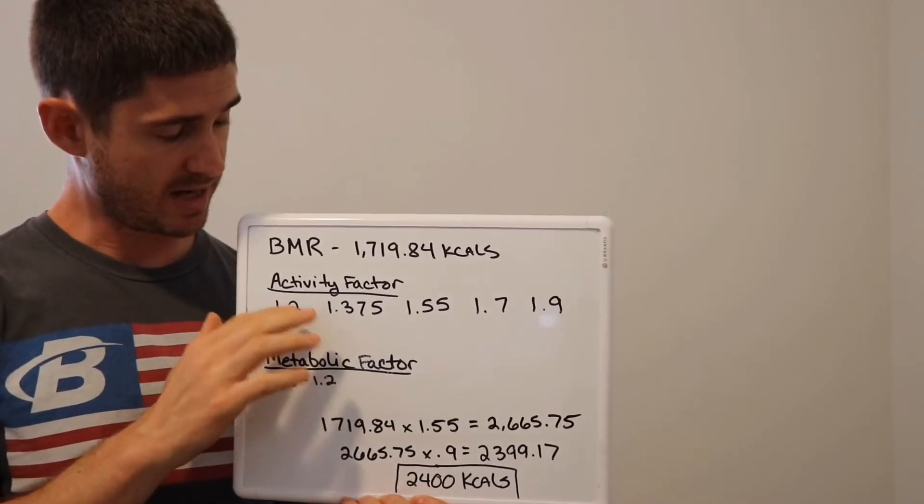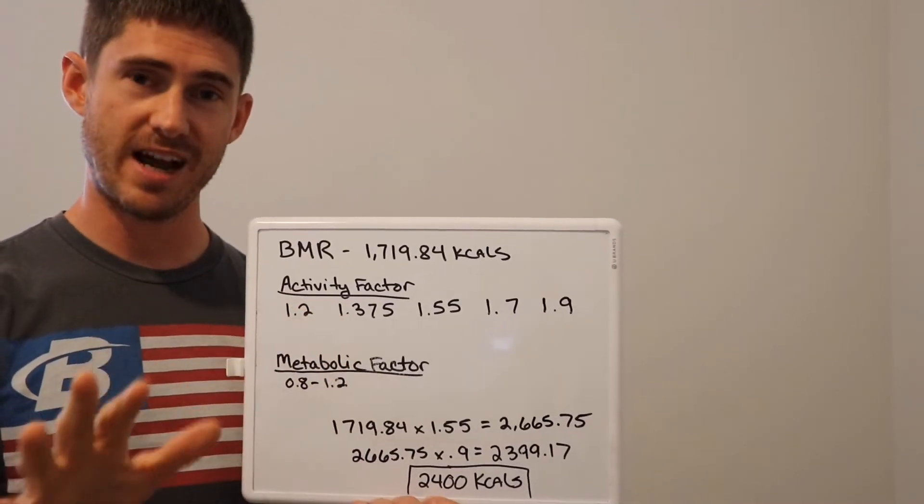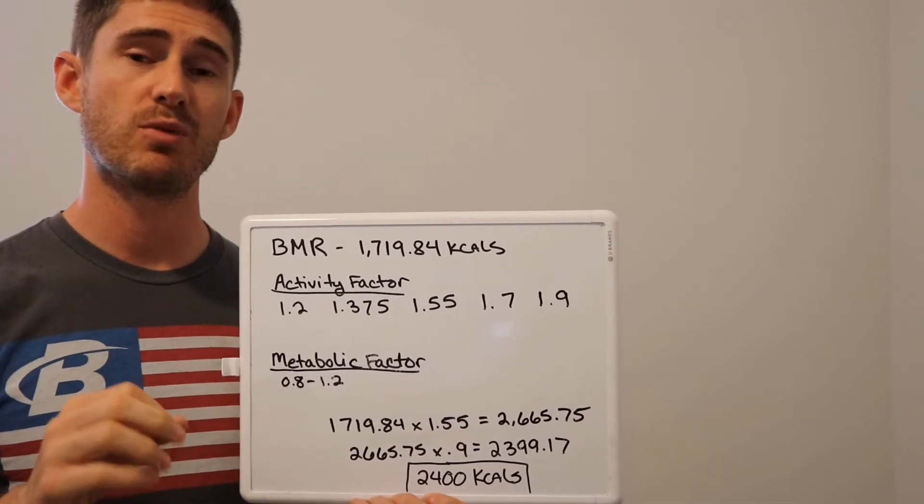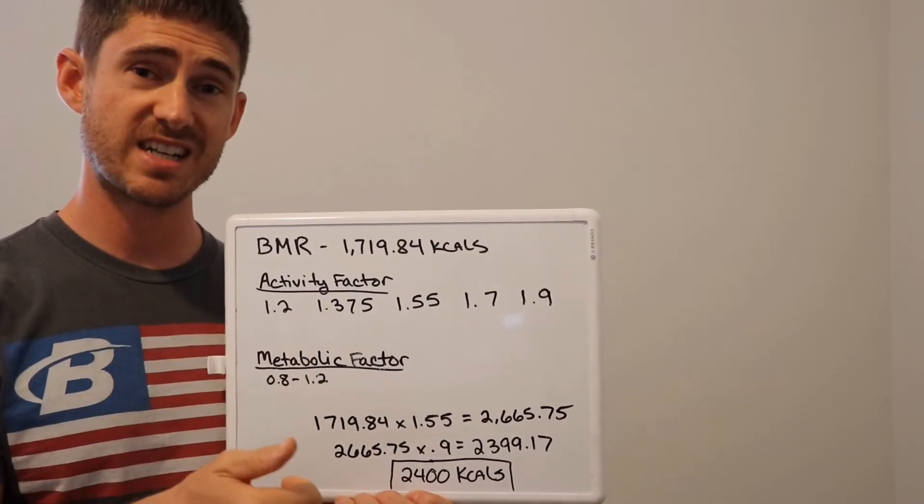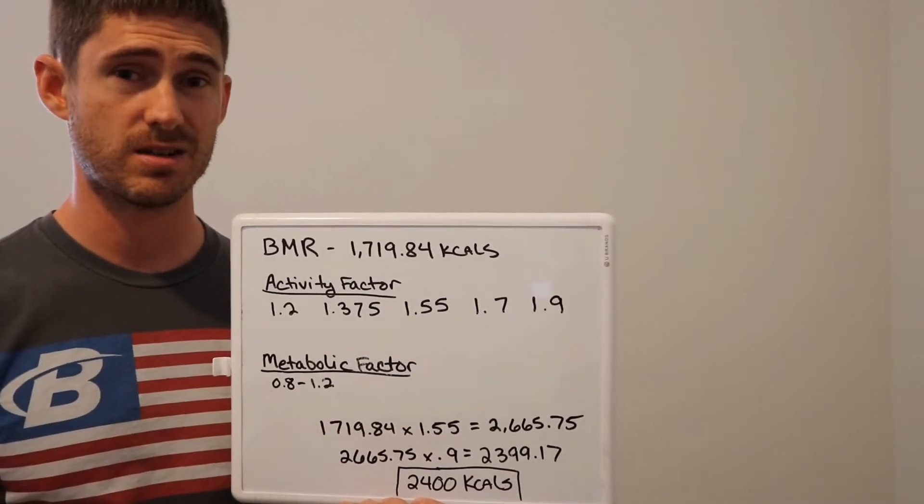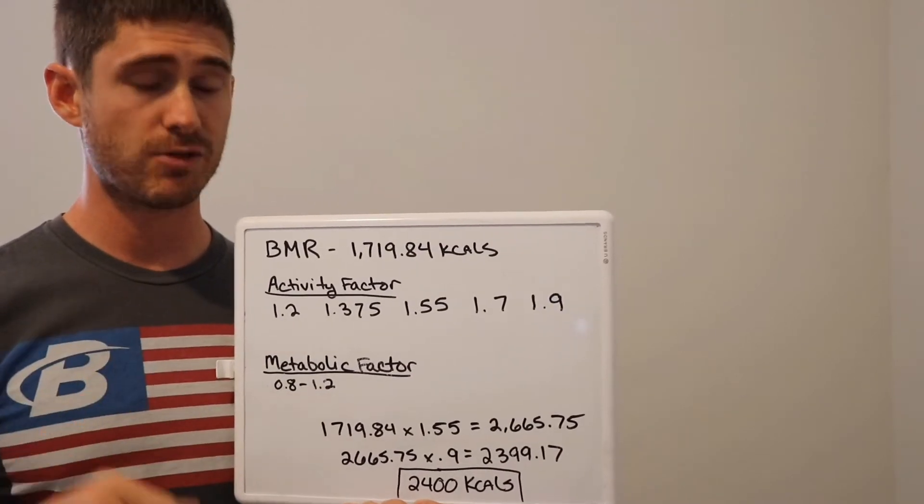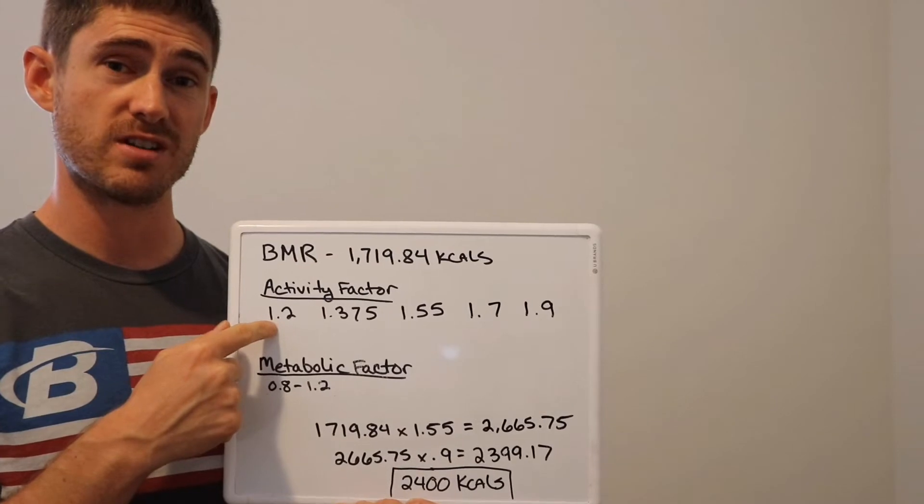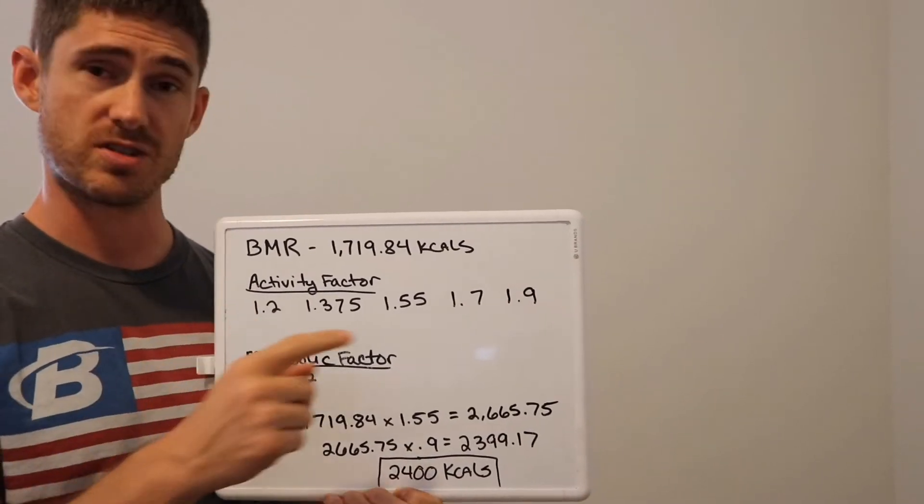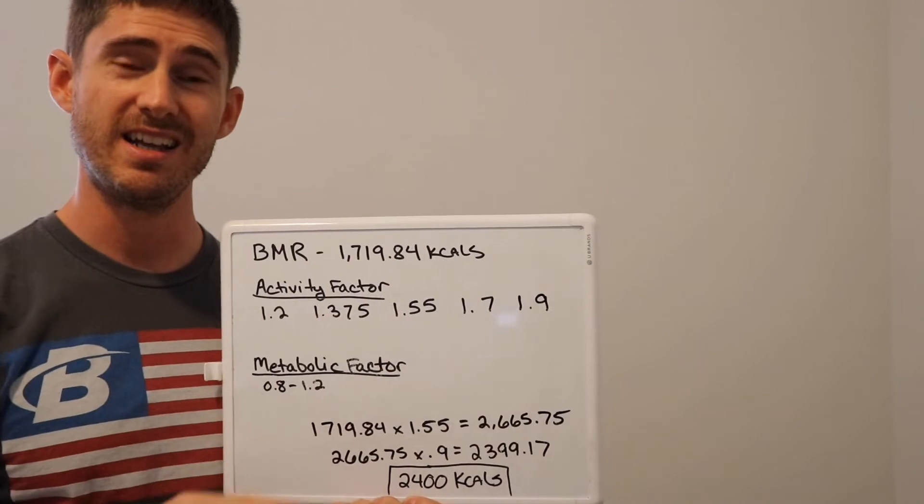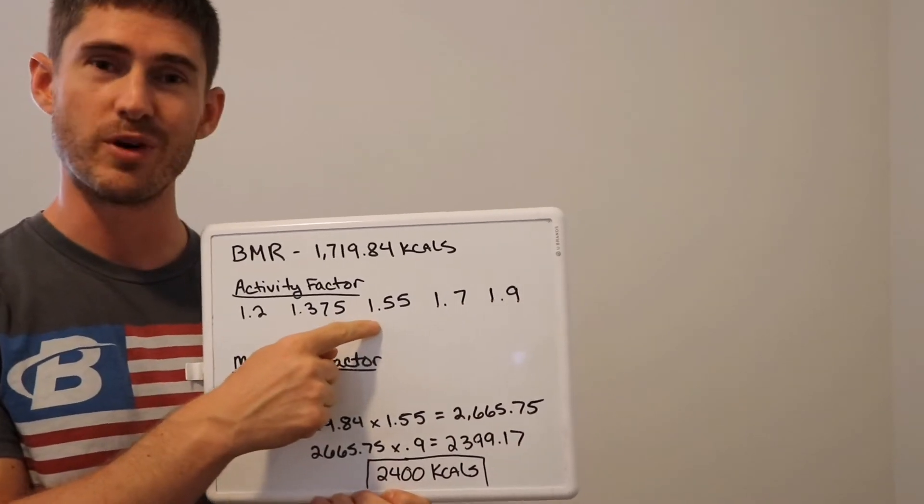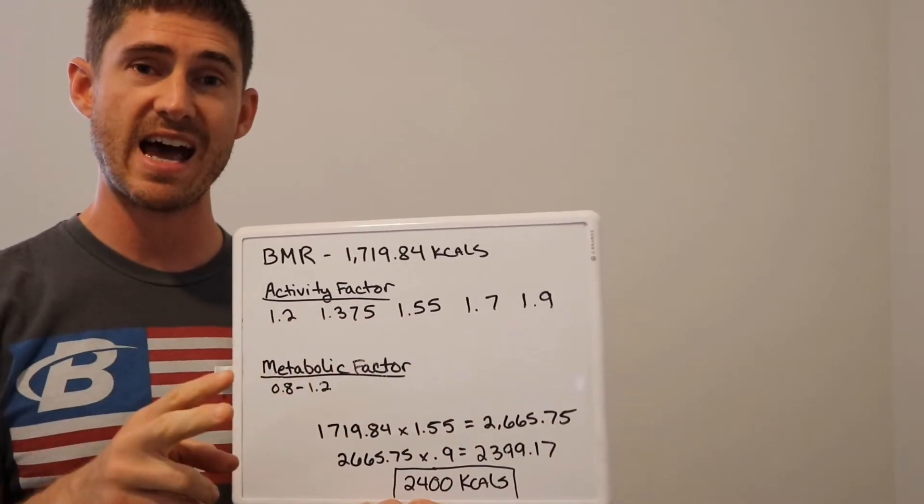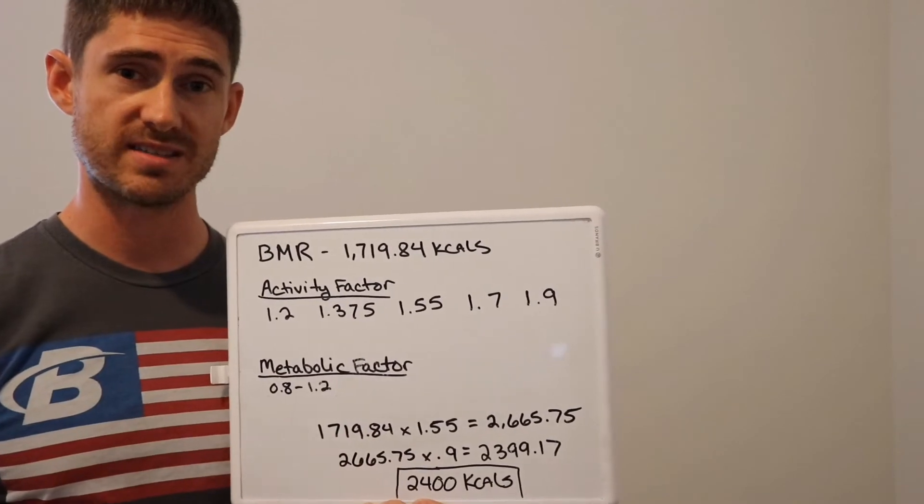We use this activity factor in regards to lifestyle and exercise, and we take the average. So let's say somebody was 1.2 as far as their daily activity level, but their exercise was at a 1.9. That's going to even out to 1.55. So you would use that to move on with the rest of the example here.